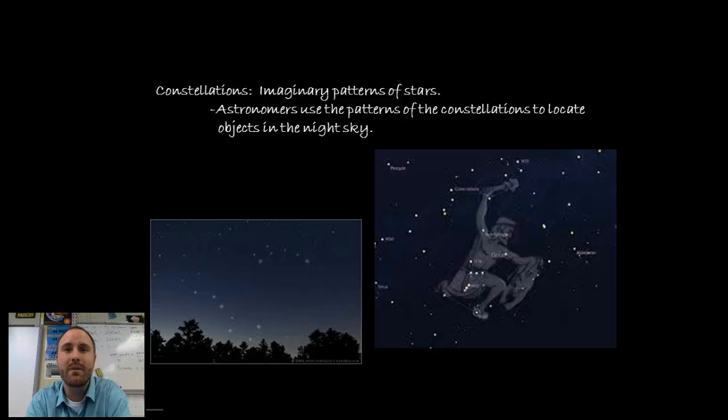If you have, you have seen something that is called a constellation and this is something that people for years have been interested in. In fact, some cultures have given them specific names and what you're really looking at is a constellation which is an imaginary pattern of stars. Even though they're not aligned to make a shape, they seem to look that way and so astronomers have used constellations to help locate objects within the night sky.